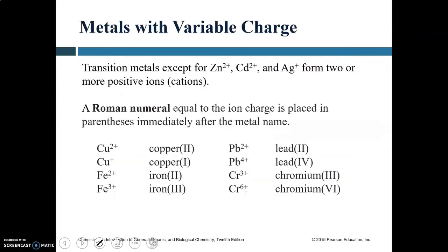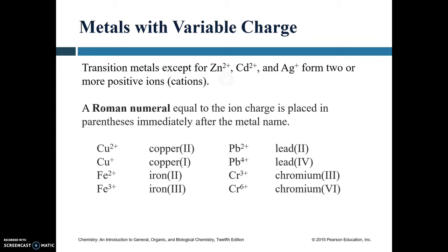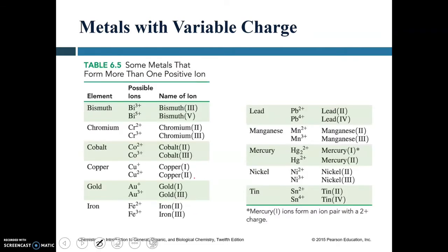Now let's talk about metals with variable charge — transition metals. Many transition metals, except zinc, cadmium, and silver, can form more than one positive cation. In that case, a Roman numeral representing the ion charge is placed after the metal name in parentheses. Examples: copper(I), copper(II), iron(II), iron(III). Lead can form Pb²⁺ and Pb⁴⁺; nickel can form Ni²⁺ and Ni³⁺; gold can form Au⁺ and Au³⁺.